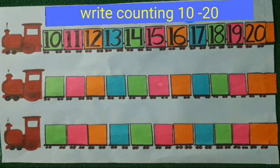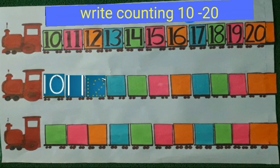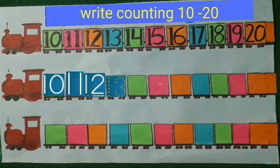Now kids, from page number 56 of your book, I will write counting from 10 to 20 on these train boxes. See kids, I am writing number 10 on this first box. Now, after 10, I will write number 11 on this box. See kids carefully, I write number 11. Now I am writing number 12 — firstly I write number 1, then I write number 2. What number will come after 12? Yes, number 13. See kids, I am writing number 13.